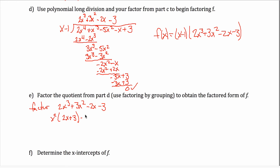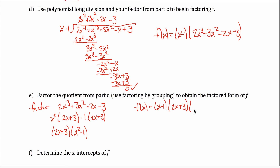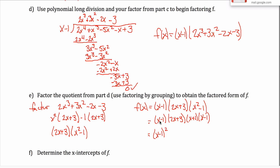I now look at the second group and factor something out so I'm left with the same target, (2x + 3). I can do that by factoring out a −1, giving −1(2x + 3). Now both terms share a (2x + 3) factor. Factoring it out leaves (x² − 1). So f(x) = (x − 1)(2x + 3)(x² − 1). But x² − 1 is a difference of squares, factoring as (x + 1)(x − 1), giving the final form (x − 1)²(2x + 3)(x + 1).